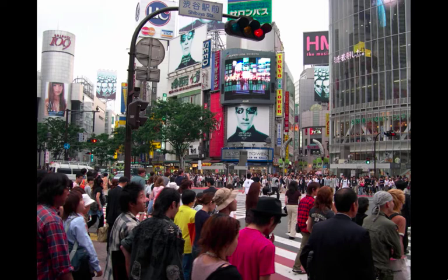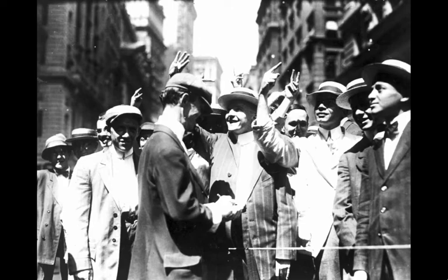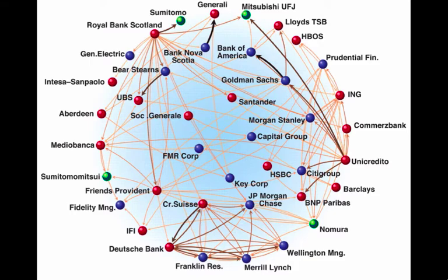Another example of a complex system is the economy. Millions of individuals, companies, banks, governments, and other organizations are constantly buying, selling, borrowing, lending, and otherwise interacting with one another.